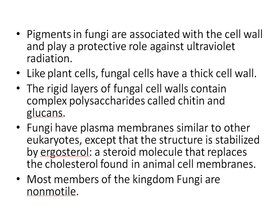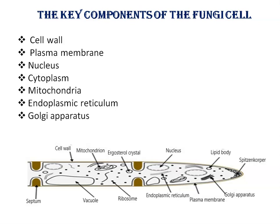Most members of the kingdom fungi are non-motile, meaning they lack locomotion. The key components of the fungal cell include cell wall, plasma membrane, nucleus, and cytoplasm. You can see here the structure of a fungal cell — a hypha — showing the cell wall, plasma membrane, nucleus, cytoplasm, mitochondrion, endoplasmic reticulum, Golgi apparatus, and also the septum with its pore.